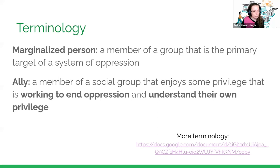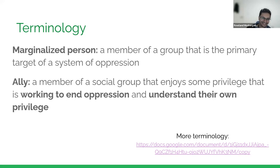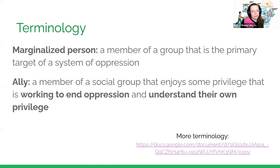A little bit more terminology — this is the last terminology slide, and I'm not going to go over all of it because that's going to be too complicated. There's a link in the slides to more terminology if you want to learn more. A marginalized person is a member of a group that is the primary target of a system of oppression — for example, a person with a disability.